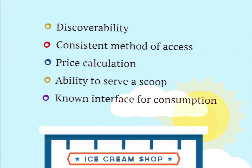I want to make sure there's a consistent method for accessing these units of functionality — aka ice cream flavors — so that you don't have to have a different scoop for every container of ice cream; that would be horribly inefficient. And then you want to be able to do things like calculate what the cost of a scoop of ice cream is, and maybe work with external vendors to bring in additional flavors, but not have to augment my system every time I get a new flavor from somebody different.